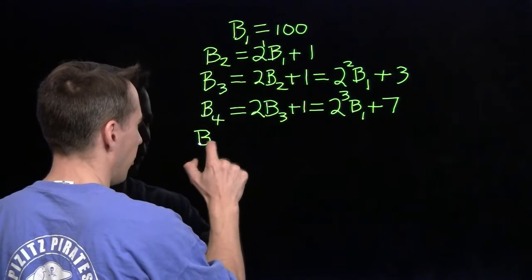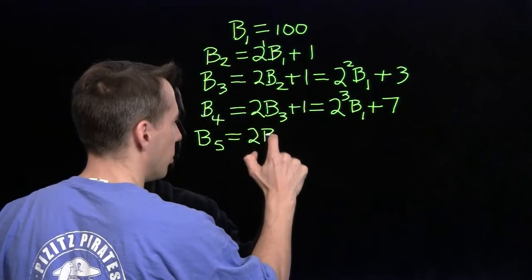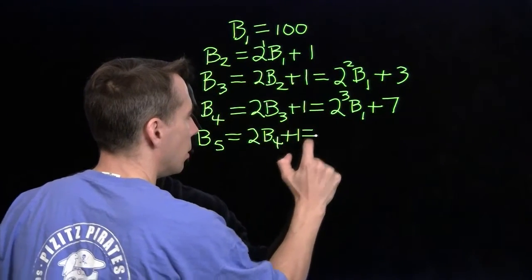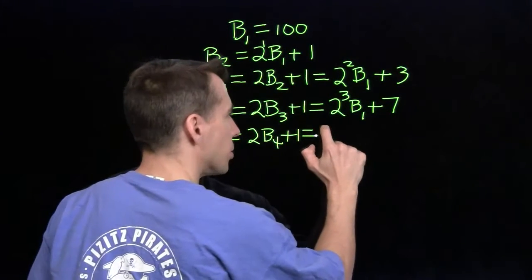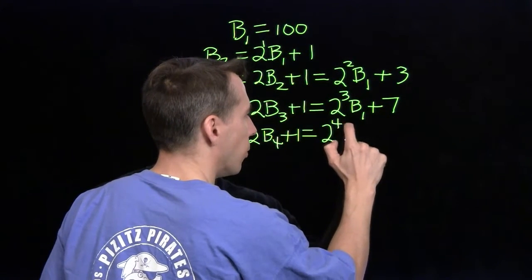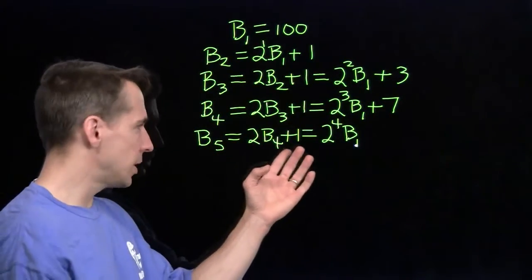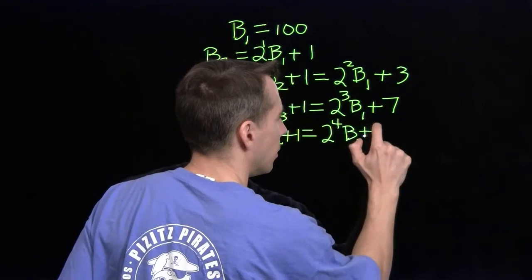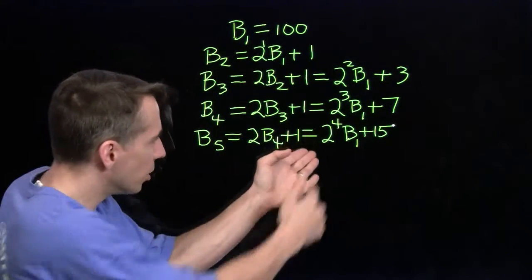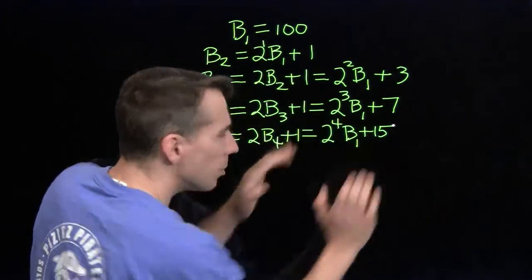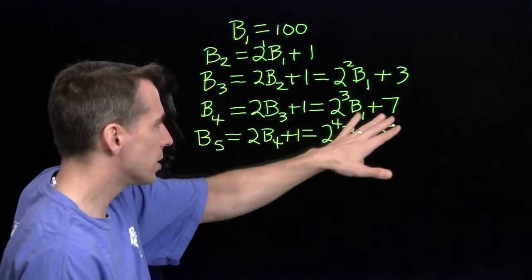b-five is double b-four plus one. When I double b-four and multiply by two, the exponent goes up by one more — I get two-to-the-fourth times b-one. Then I double the seven to get 14, and add one to get 15. Now it's clear that each doubling step just moves the exponent up by one. But those numbers out here — one, three, seven, 15 — are still a mystery. They're not quite doubling each time; they're doing a little more than double-and-add-one.